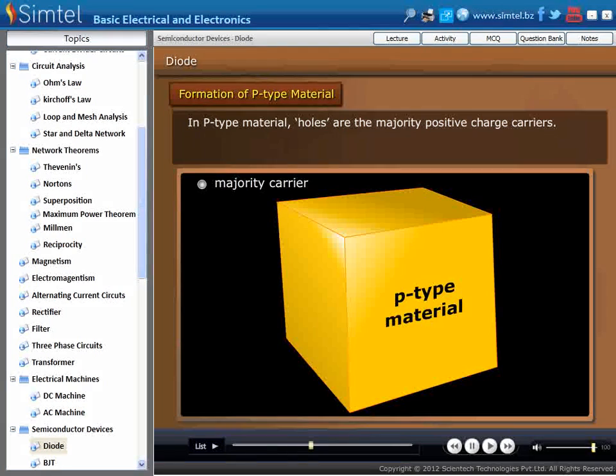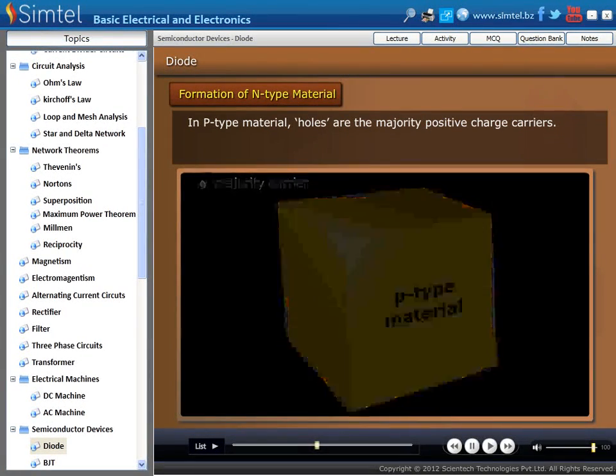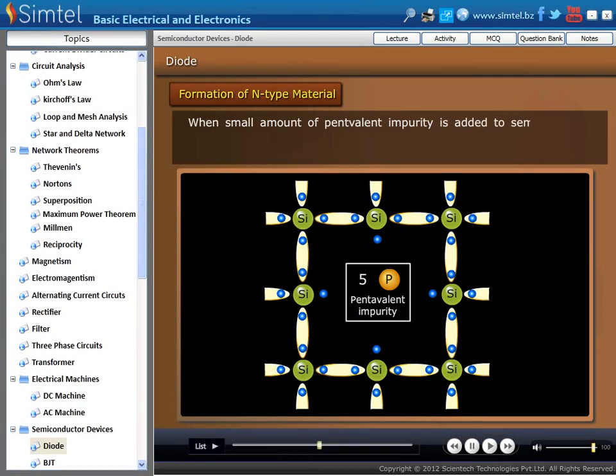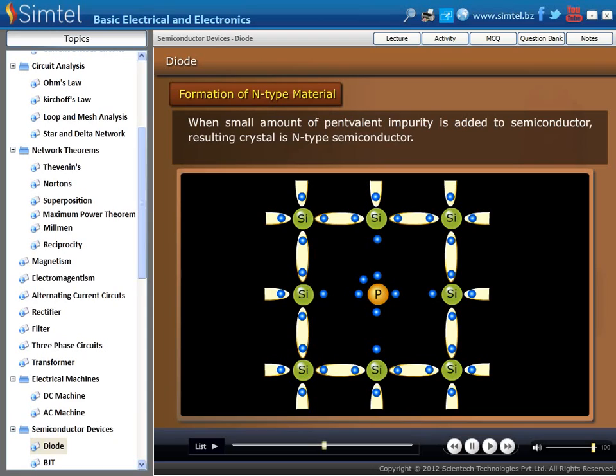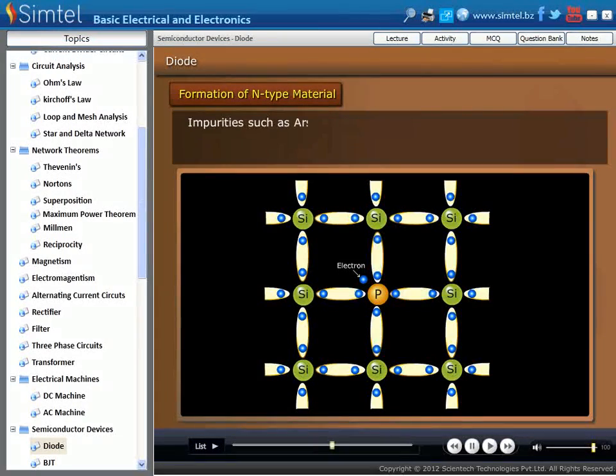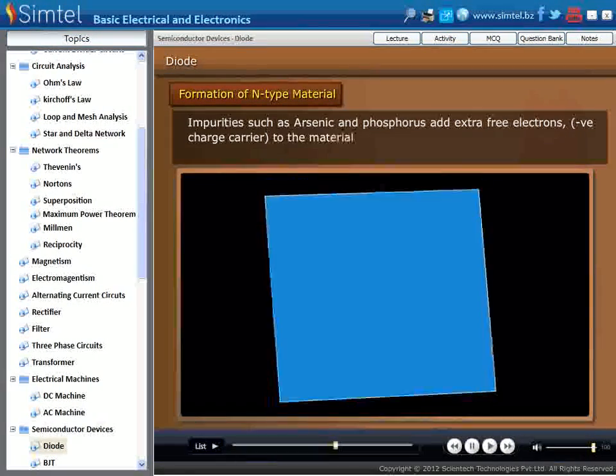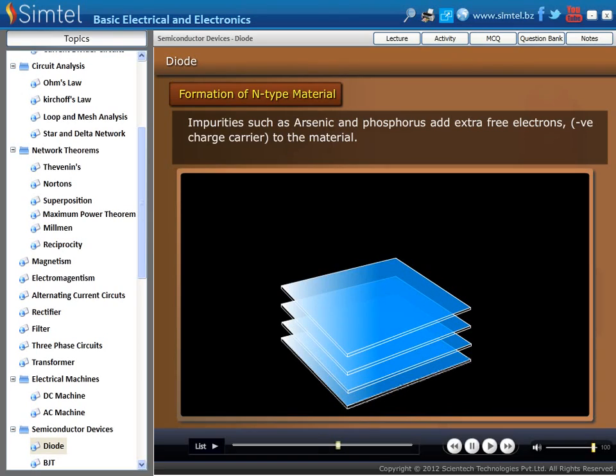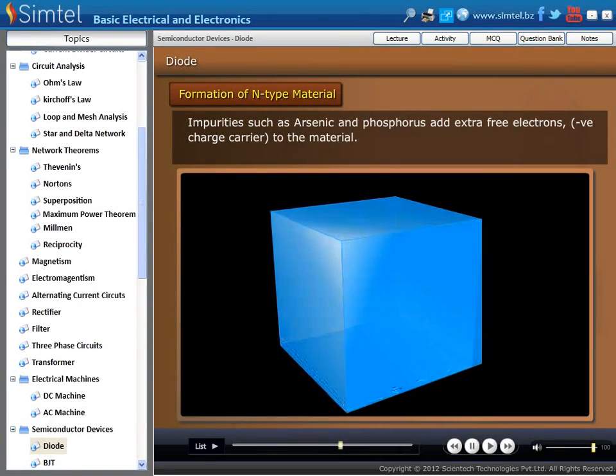Now we are going to discuss about formation of N-type material. When small amount of pentavalent impurity is added to semiconductor, resulting crystal is N-type semiconductor. Impurities such as arsenic and phosphorus add extra free electrons to the material.